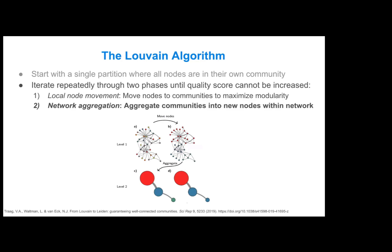The second phase is network aggregation. Once you've moved all your nodes to communities to maximize the modularity, you aggregate those new clusters or communities into nodes themselves within the network. Then you can repeat the whole phase of local node movement again with those new aggregated nodes.